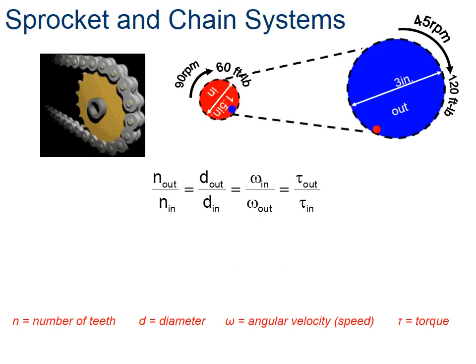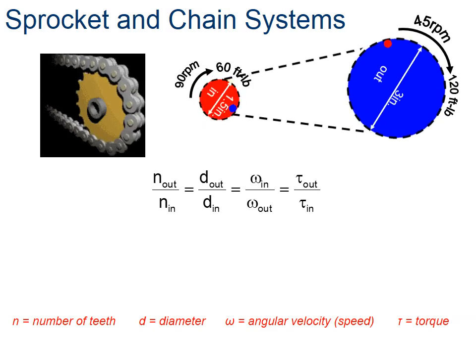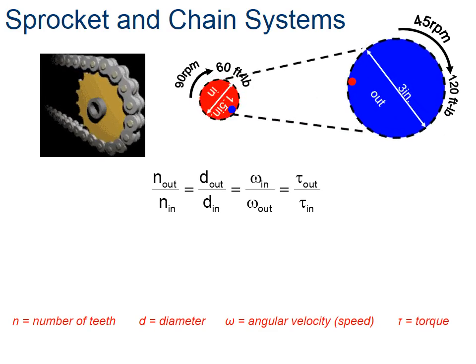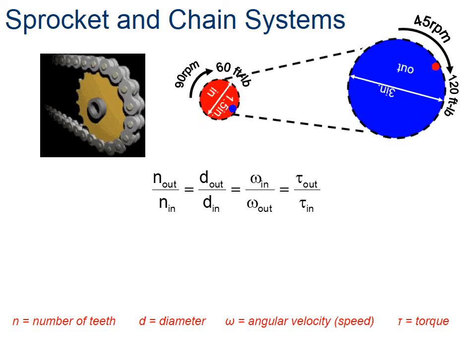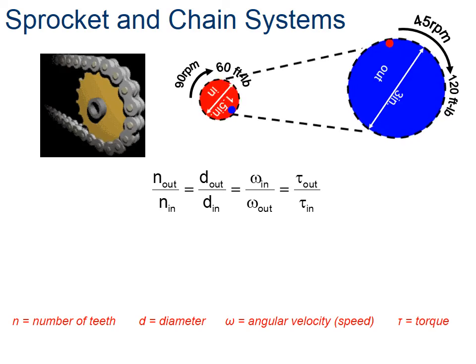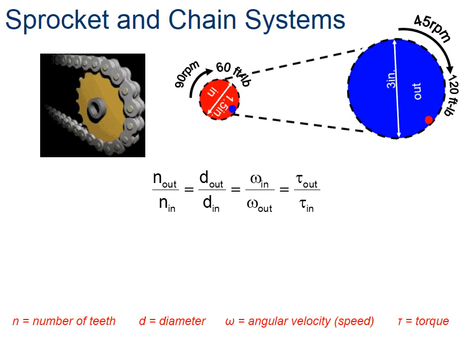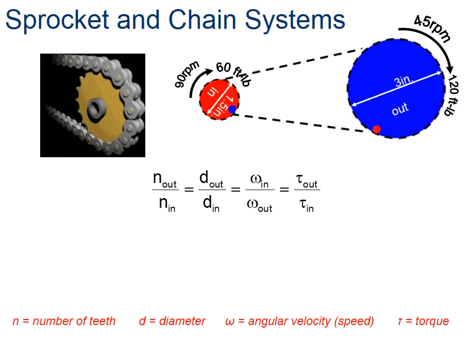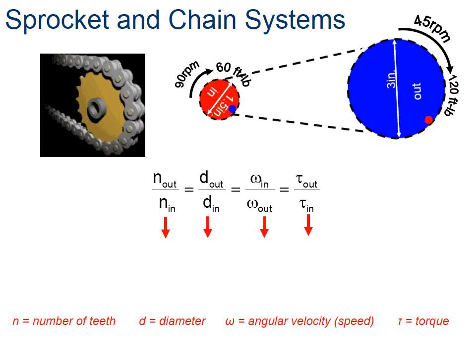And we can also use those same equations for our sprocket and chain system. You can think of a bike—you know this from a bicycle, and there are lots of other things. You can look inside some engines and see some chains. Your garage door opener is either going to use a chain, or it might use a belt and pulley. Whatever it uses, we can use these equations.